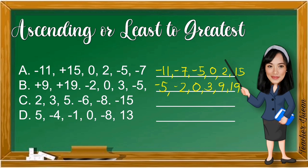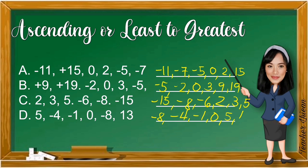Letter C: we have 2, positive 3, positive 5, negative 6, negative 8, and negative 15. In ascending order: negative 15, negative 8, negative 6, positive 2, positive 3, and the highest is positive 5. Letter D: we have negative 4, negative 1, 0, negative 8, and positive 13. The lowest is negative 8, followed by negative 4, negative 1, 0, positive 5, and the highest is positive 13.